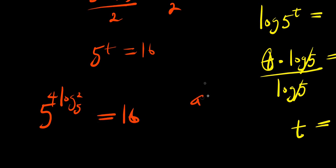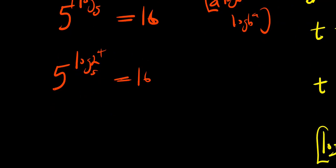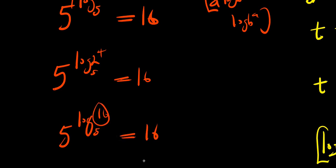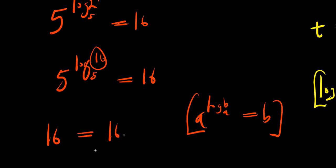Now if you have e times log b, this equals log b to the power of e. So we have 5 to the power of log 2 to the power 4, base 5, equals 16. Since 2 to the power 4 is 16, we have 5 to the power of log 16 base 5 equals 16. And since a to the power of log base a of b equals b, we get 16 equals 16 — both sides are the same, so that is correct.